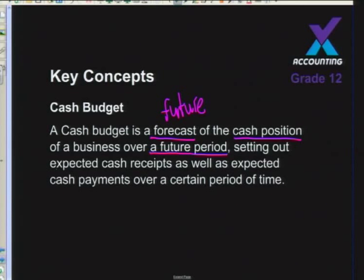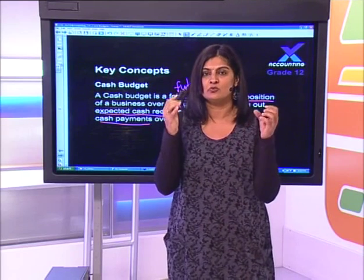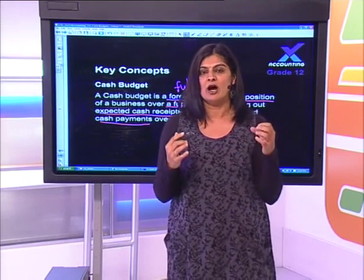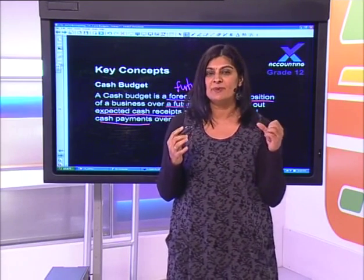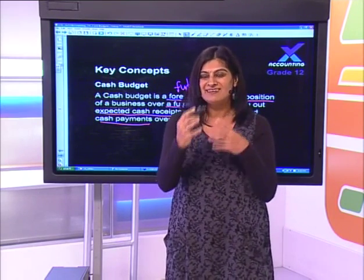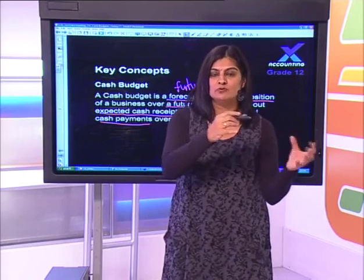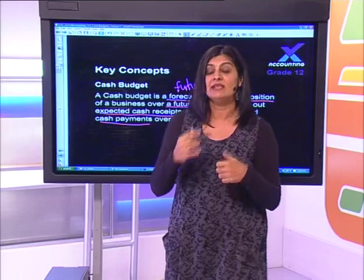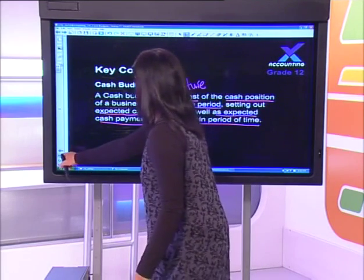A cash budget sets out expected cash receipts as well as expected cash payments over that period of time. The word expected refers to something that hasn't happened as yet - how much cash do I expect to receive into my bank account, and how that cash is going to be spent.